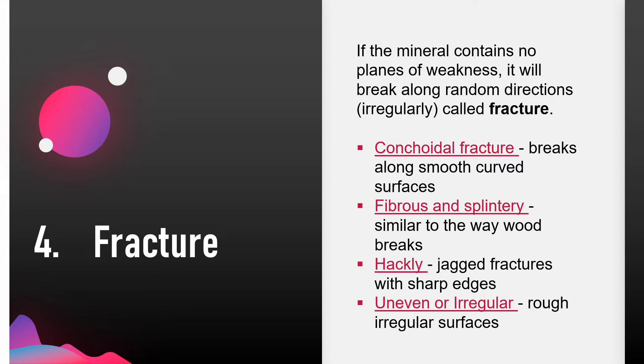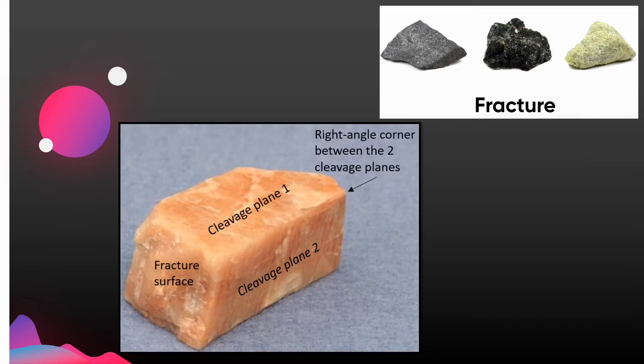Several different kinds of fracture patterns are observed. First is conchoidal fracture, observed in the mineral quartz — it breaks along smooth curved surfaces. Fibrous and splintery fracture, as observed in kyanite, is similar to the way wood breaks. Hackly fracture produces jagged surfaces with sharp edges, as seen in native copper. Uneven or irregular fracture produces a rough irregular surface, observed in pyrite or magnetite. You can clearly see the difference between fracture surface and cleavage planes, and note the right angle corner between two cleavage planes.